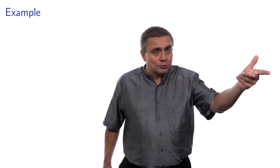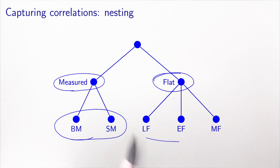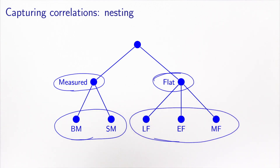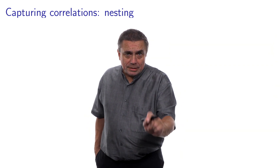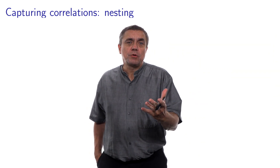The idea is to relax the independence across alternatives. This example was selected because we expect the two measured alternatives are actually correlated — they could go in the same nest if we think about the nested logit model — and the same for the three flat alternatives. So I define two nests, measured and flat, and associate the two measured alternatives to the first nest and the three flat alternatives to the second nest. To represent this nesting structure, I will use the error component specification in the context of mixtures.